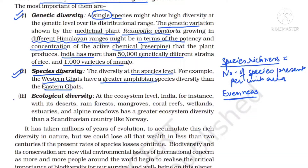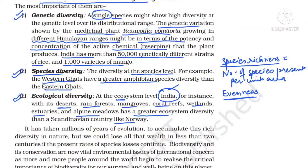The third diversity is ecological diversity, also known as community diversity. In India we have different types of ecosystems: deserts, rainforests, mangroves, coral reefs, wetlands, estuaries, and alpine meadows. Alpine meadows are at the topmost of the hills. Because India has so many ecosystems, it has great diversity as compared to a country like Norway. This shows diversity exists at every level — genetic, species, and ecological.